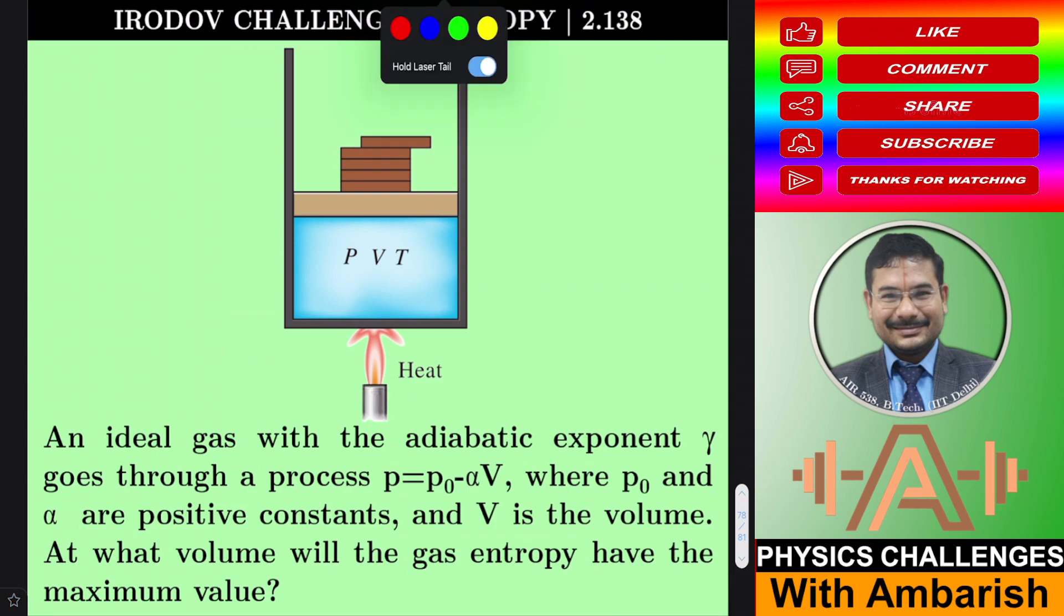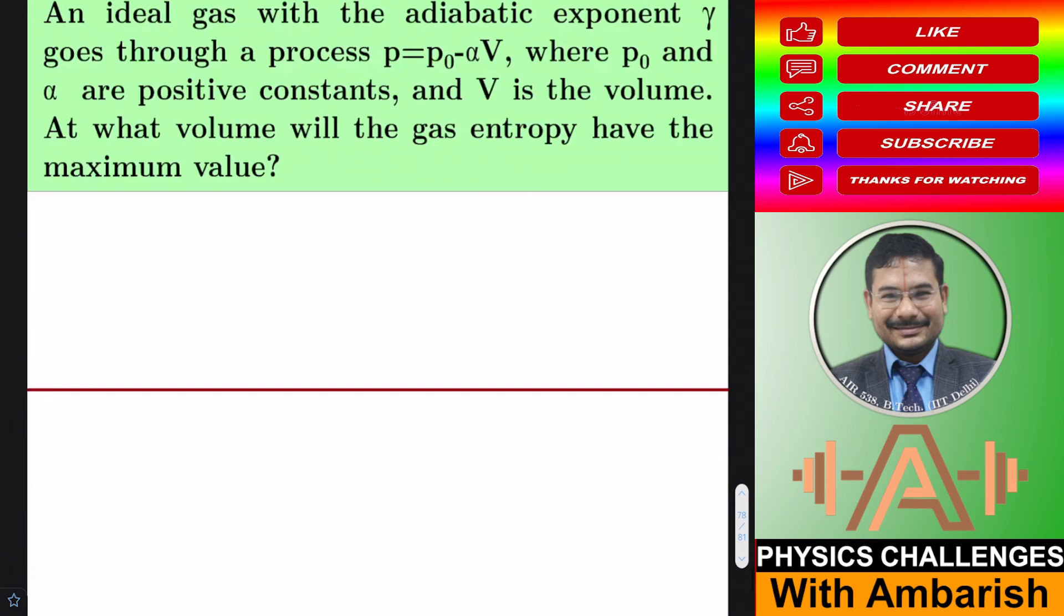So here is the problem. An ideal gas with adiabatic exponent γ goes through process P = P₀ - αV, where P₀ and α are positive constants and V is the volume. At what volume will the gas entropy have the maximum value? So this is the problem, this is Irodov 2.138. If you want, you can give it a try. I will get into my analysis straight away, let us see.